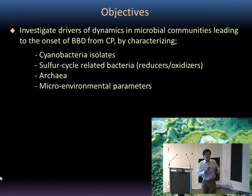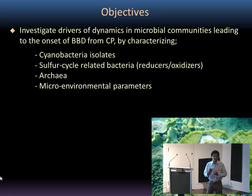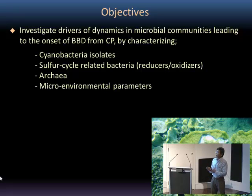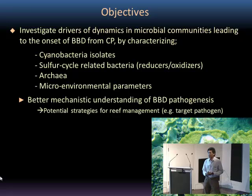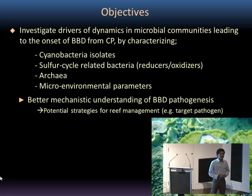Using this cyanobacterial patch to black band disease field system, we looked at what sorts of mechanics are involved in the development of black band disease, by looking at cyanobacteria isolates from the cyanobacterial patches and black band disease, and sulfur-cycle-related bacteria, and also archaea — the third domain of microbes — and looking at microbial and environmental parameters associated with this disease development. This information will give a better mechanistic understanding of how this disease starts working, and might lead to potential strategies to mitigate this disease, such as targeted pathogens for these really complex communities.